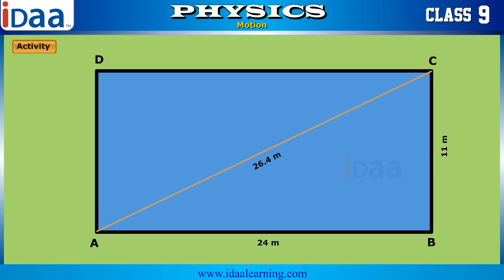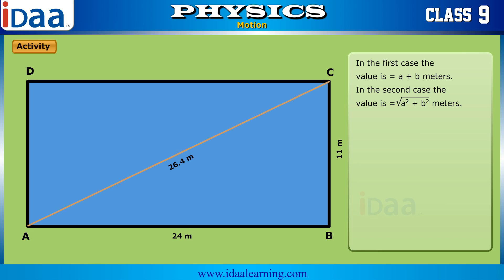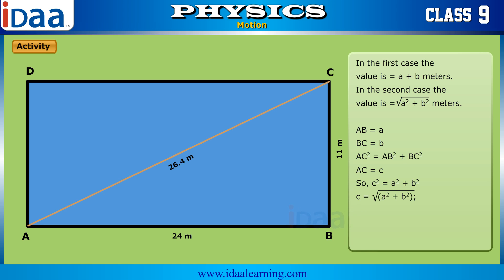The displacement can also be directly calculated using the Pythagorean theorem. The square of the diagonal is equal to the sum of the squares of the sides. By plugging the values into the equation, we get the same values as we measured. In this case, we find that the shortest route from one corner to the other of a rectangle is along the diagonal.